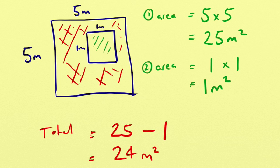That's how we work out the area of that compound shape. If we get any odd shapes — rectangles or squares with bits missing — we split them into two different shapes we can work with, such as squares or rectangles, and then either add or subtract those areas to get the area of the compound shape we need.